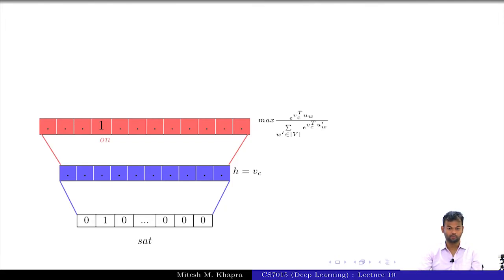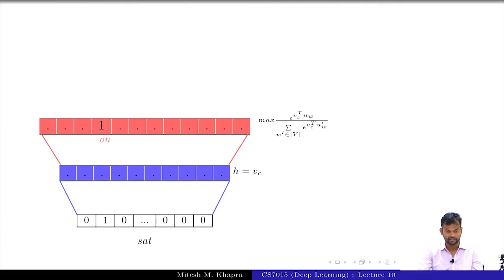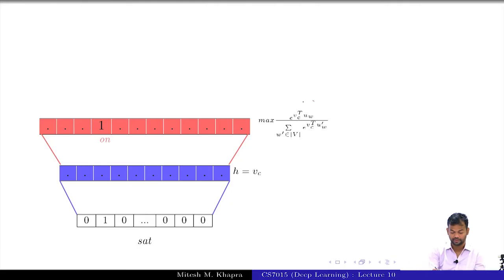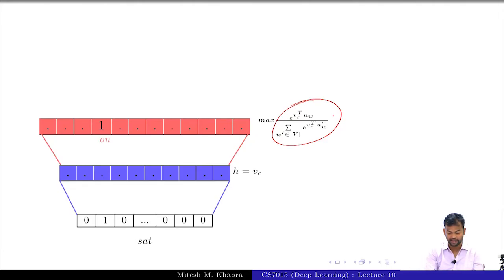This is what our original network was — either a skip gram model or a continuous bag of words model. Let's take it as a continuous bag of words model. We had a word as the input, then a large prediction layer with a softmax computation giving you the probability, and we are trying to maximize this probability for the correct word VW.